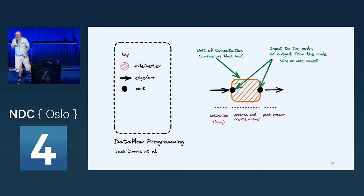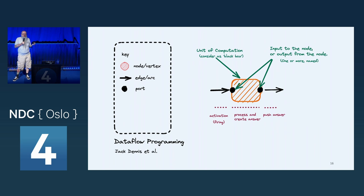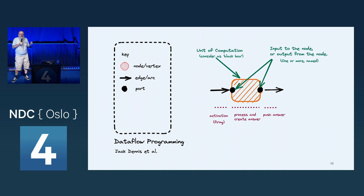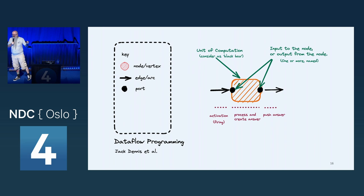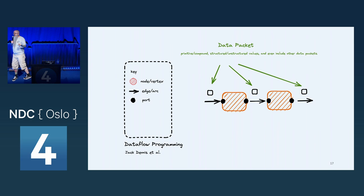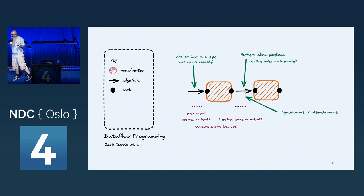A dataflow node has typical characteristics: an input port and an output port — sometimes more than one — allowing data to flow in for transformation and transformed data to flow out. A node is activated or fired because there is data waiting on a port. It comes into existence, processes that data, and pushes an answer out the far side. The data packets can be anything — structured, unstructured, or even including other data packets.